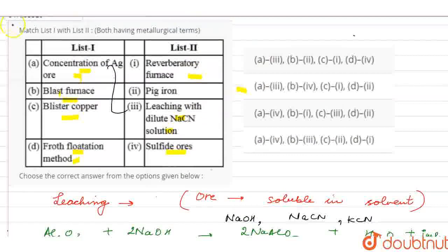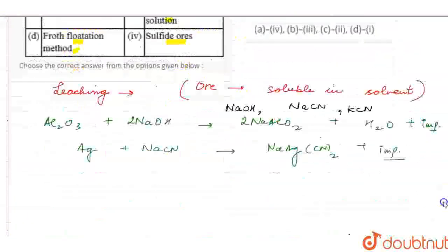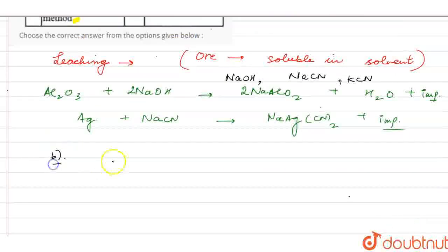Next, I will talk about blast furnace. So, what happens in blast furnace? Blast furnace is present here, for part B. What happens in blast furnace? Carbon and impurities.